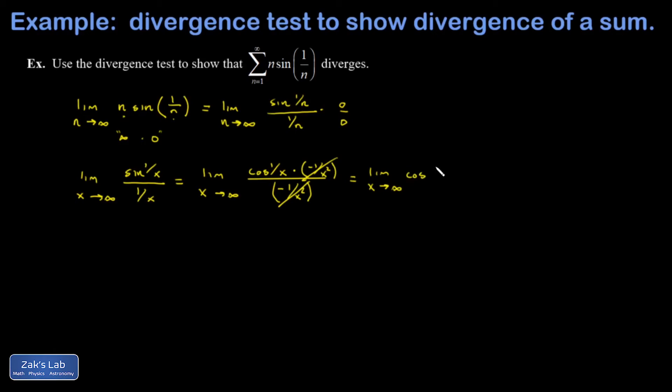So I have the limit as x goes to infinity of cosine 1 over x. And 1 over x gets close to 0 when x becomes large. And the cosine of 0 is 1. Finding out that the terms of this series are getting closer and closer to 1 as n becomes larger means that we're adding 1 infinitely many times. So there's no way this series converges. It diverges to infinity.